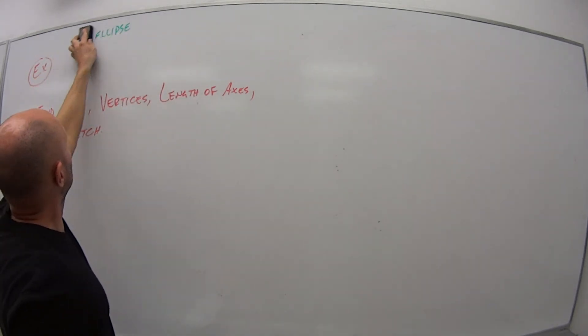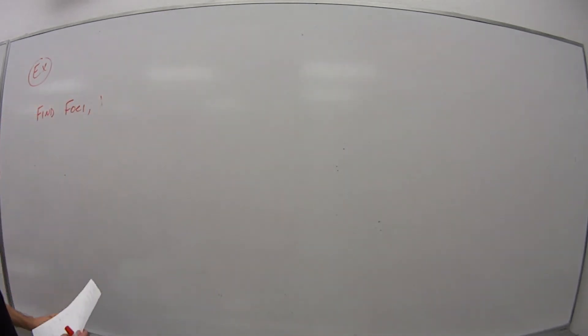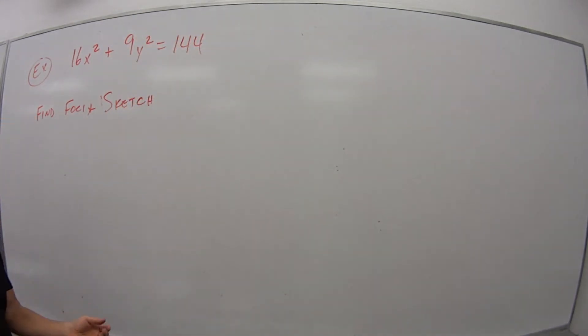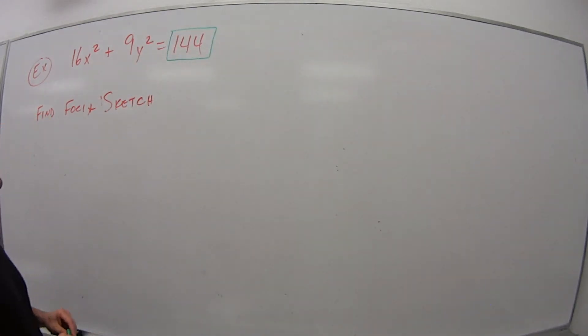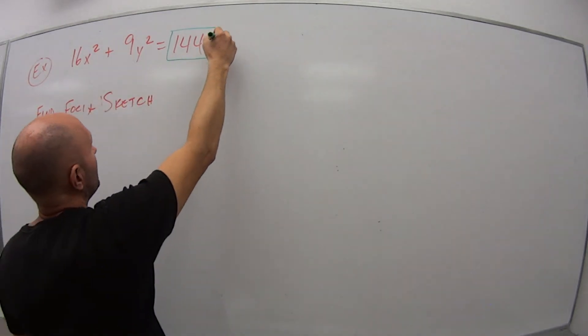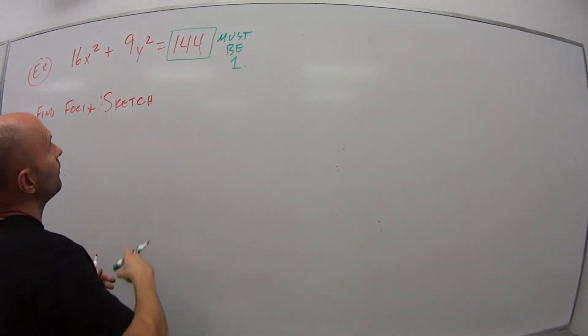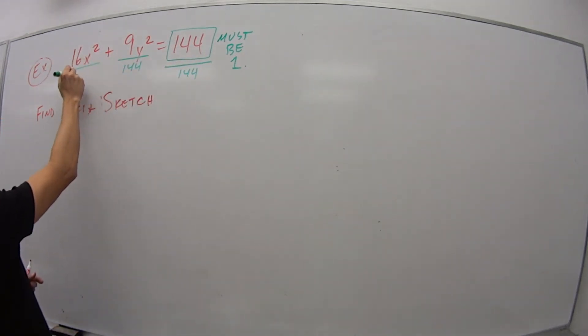Alright. So our second example, in this case we just want to find the foci and sketch. Here we have the equation 16x squared plus 9y squared equals 144. So right now this doesn't tell me anything. And why is that? Before I can even start, I have to ask myself, is this value 1? And it's not. It must be 1.